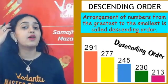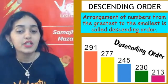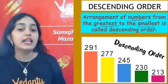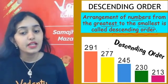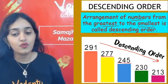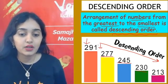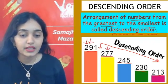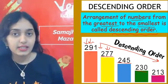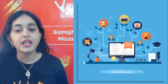Descending order is the largest-to-smallest order — upar se niche. For example: 291, 277, 245, 230, 213. How did we compare? First digit ko compare karo; if it's the same, compare the next digit. Nine is greater than 7, so 291 is greater than 277. This is how we arrange numbers in descending order.